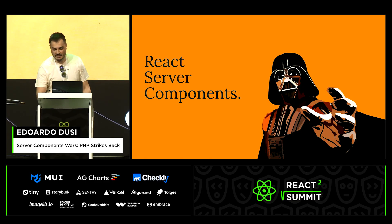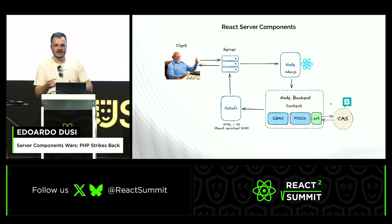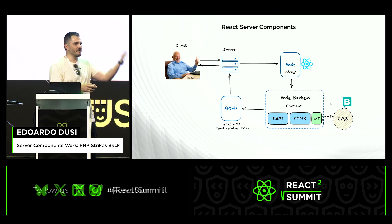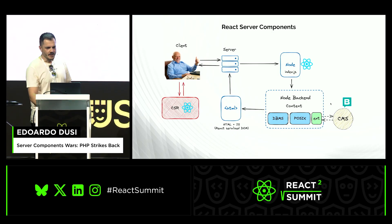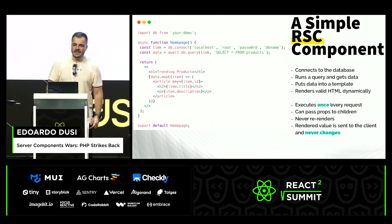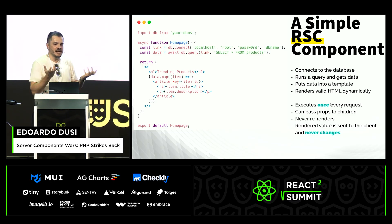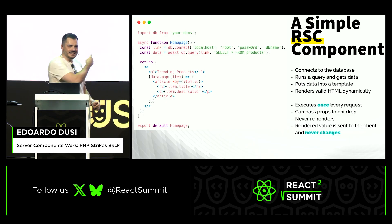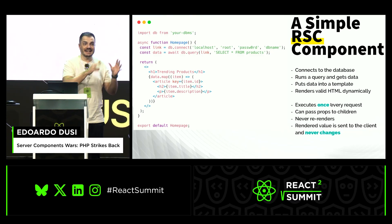I have two minutes to introduce React Server Components, so I'll be quick. You make a request to the server. The server routes it to an index.js processed by Node. Node requests content from the backend — a DBMS or a wonderful headless CMS — and renders an HTML file. That HTML is sent back to the server, then to the client. There can be some client-side rendering on top of that. This React Server Component executes once per request. It never re-renders, and the rendered value is sent back to the client and never changes.